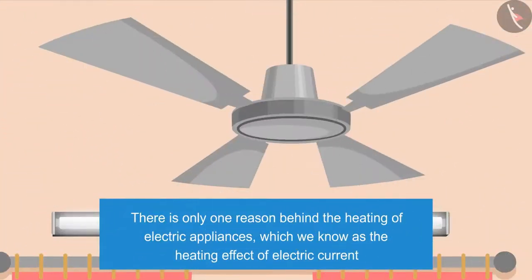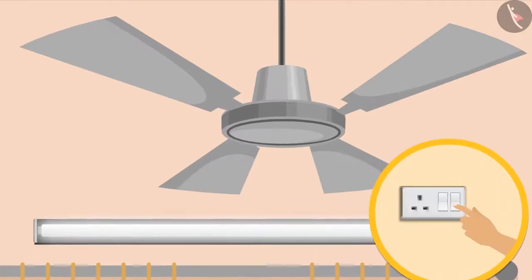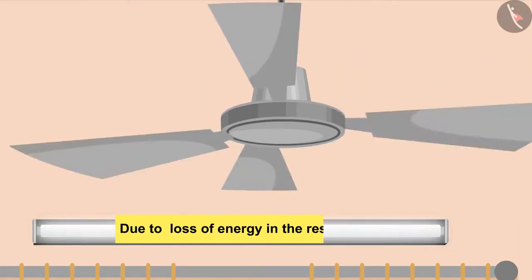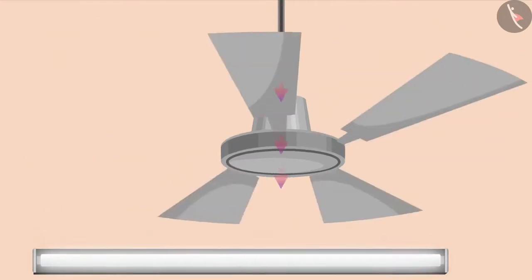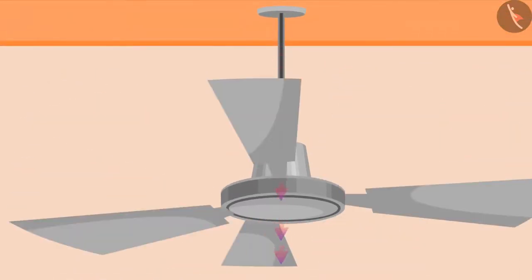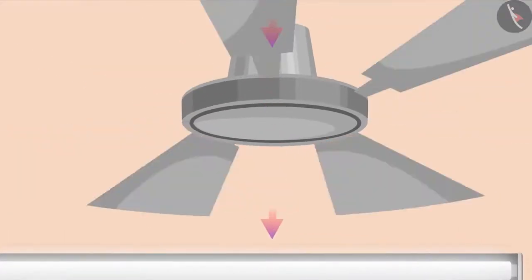There is only one reason behind the heating of electric appliances, which we know as the heating effect of electric current. Yes, due to the flow of electric current, there is a heating effect on the appliances. The heating effect is generated due to the loss of energy in the resistance of the appliances. Some of the energy converted from electricity is used to run the equipment and the rest of the energy flows out of the equipment in the form of heat.